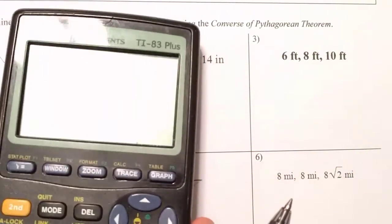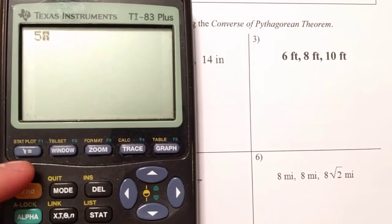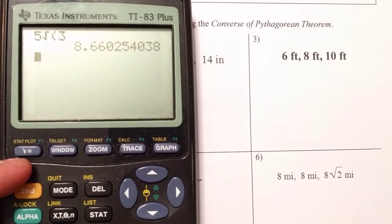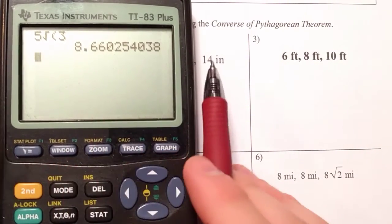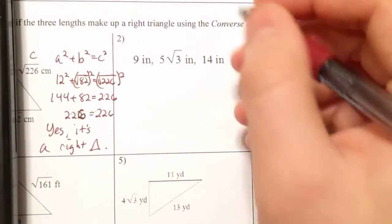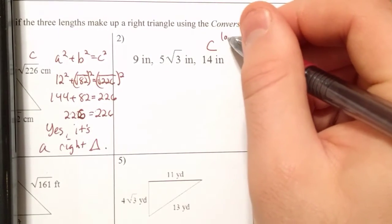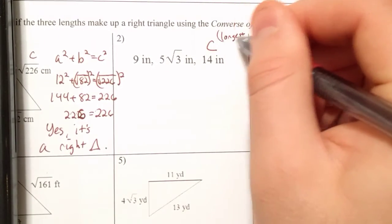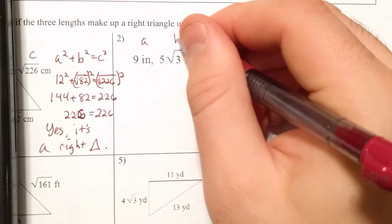And since we probably don't have that memorized, you can go ahead and type in 5 root 3 to get an approximation. So it's 8.66. 8.66 is clearly less than 14. So we're going to call this one C because it's the longest. And this is going to be A, and this is going to be B.